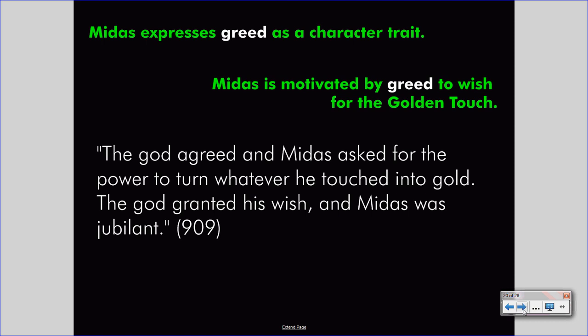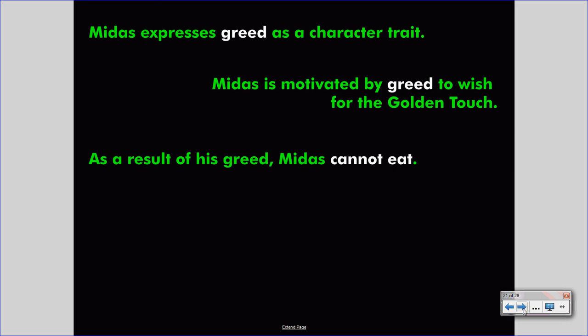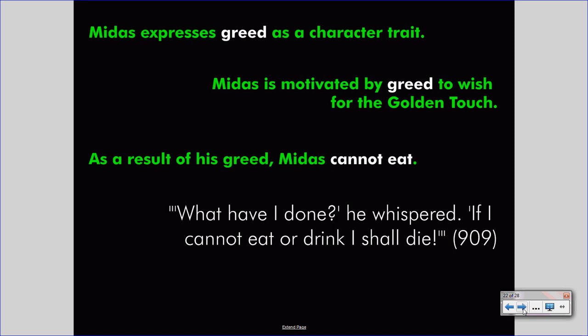As we read on page 909: 'The god agreed and Midas asked for the power to turn whatever he touched into gold. The god granted his wish and Midas was jubilant.' Greed is once again our focus. As a result of his greed, Midas cannot eat. He whispers, 'If I cannot eat or drink, I shall die.' The destruction and harm that comes from his greedy wish is becoming apparent, giving us our first piece of evidence that the author is telling us greed is destructive.